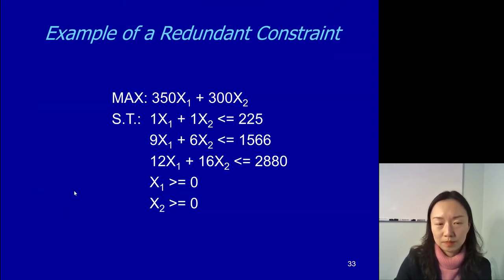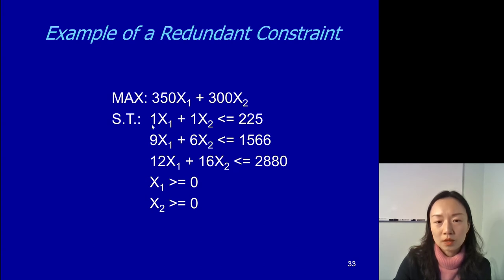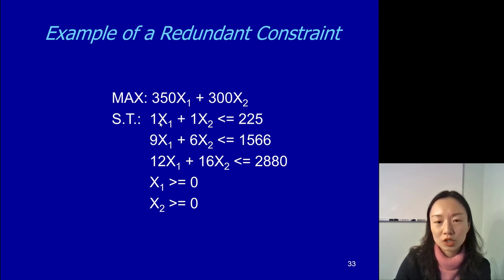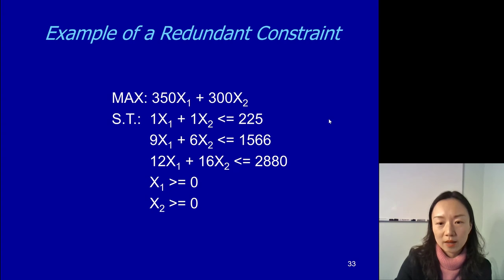Now let's look at another example called a redundant constraint. The objective function is the same, but one of the constraints gets changed. The first constraint — in the original problem the pump limit was 200, but now this company has more pumps, so instead of 200 they have 225 pumps. As a result, the first constraint changes to x1 plus x2 less than or equal to 225. The rest of the constraints and objective function are the same as the original problem, but we'll have to re-plot this one.